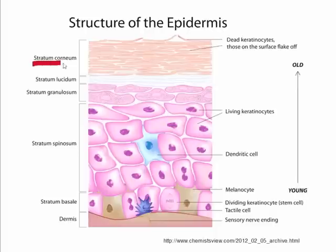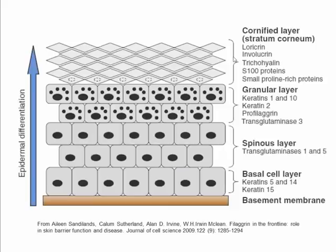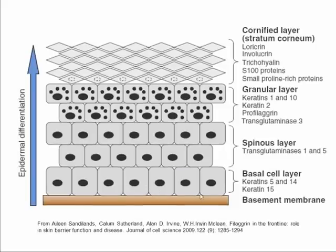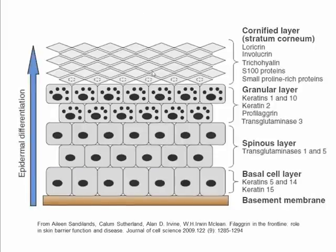This continues until the outer layer, the stratum corneum, which is the layer of dead keratinocytes which protects us and keeps us alive. As the keratinocytes are differentiating, their gene activation changes, their gene profile changes, and the protein production changes. The whole constituency of the cell changes from cuboidal cells to flattened and then ultimately dead cells.